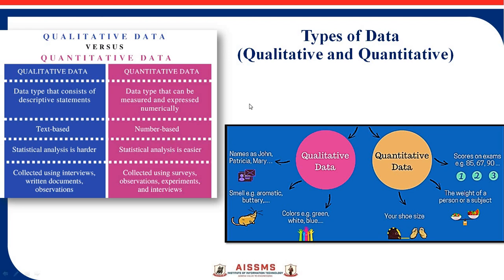In machine learning, the basic step is data pre-processing. Data pre-processing means you need to identify the types of data, the types of labels of data, and what are the different types of data available. This is the first step in machine learning.